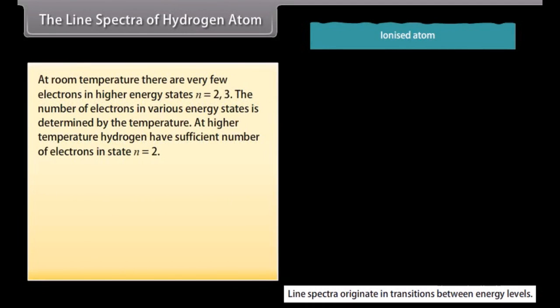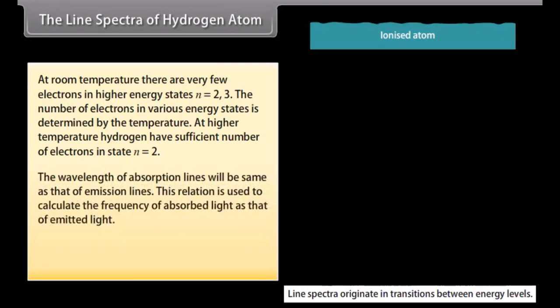At room temperature there are very few electrons in higher energy states N as 2 and 3. The number of electrons in various energy states is determined by the temperature. At higher temperature, hydrogen have sufficient number of electrons in state N as 2. The wavelength of absorption lines will be same as that of emission lines. This relation is used to calculate the frequency of absorbed light as that of emitted light. E2 minus E1 equals H nu 12 which is equal to H C upon lambda 12.